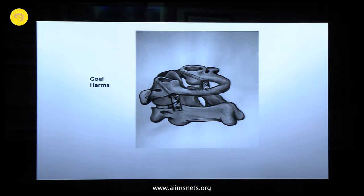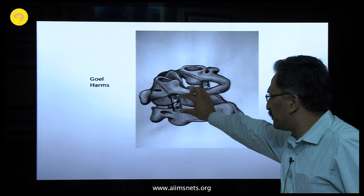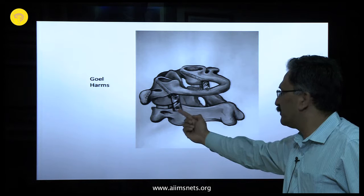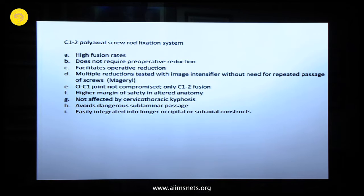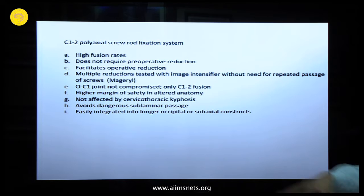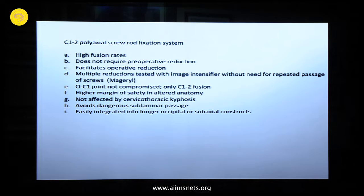Now we come to the Goel-Harms technique. You place a plate or polyaxial screws with a rod — one into C1 lateral mass and one into C2. It has very high fusion rates, does not require preoperative reduction, no sublaminar wire passing, and allows multiple screw trajectories. The occipito-C1 joint is not compromised. It has a high margin of safety with altered or asymmetrical anatomy and is easily integrated into longer occipitocervical constructs.